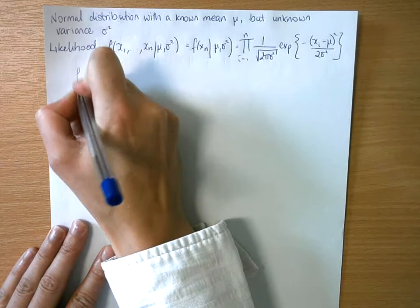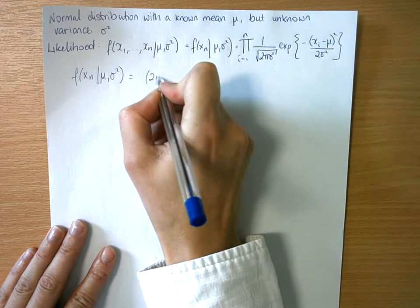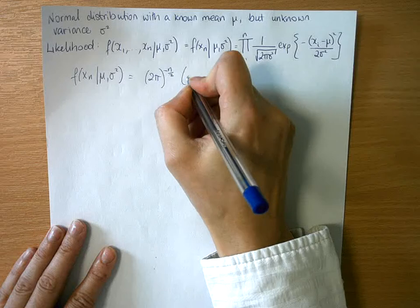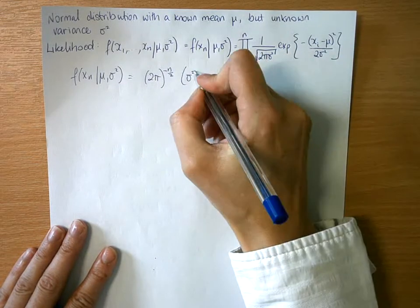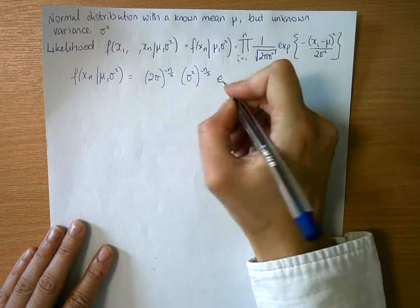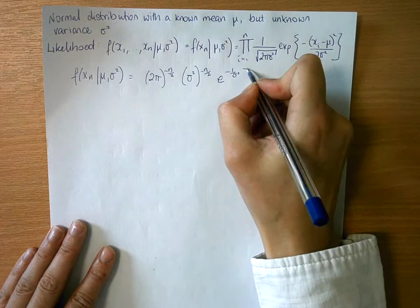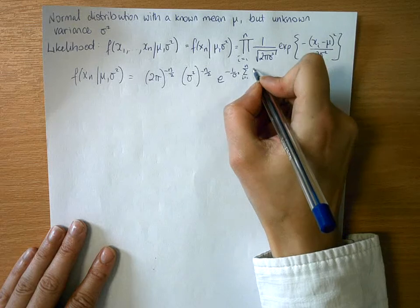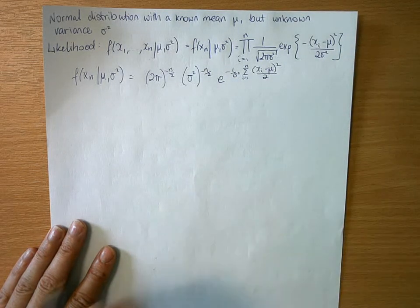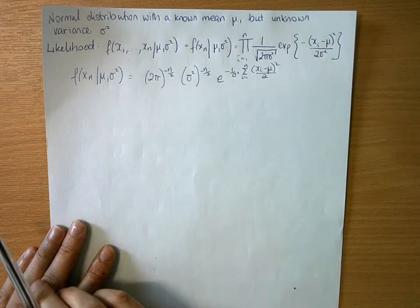We start off by saying our likelihood f of x_n given mu and sigma squared would be (2π)^(−n/2) times sigma squared to the power of minus n over 2 — I'm splitting these up because it will make life easier later on. Then e to the minus 1 over sigma squared, which is going to be a common factor. When you put a product inside an exponential it becomes a sum: the sum from i equals 1 to n of (x_i minus mu) squared all over 2. That is an alternative way of writing the likelihood function, thinking about sigma squared as the parameter of interest.